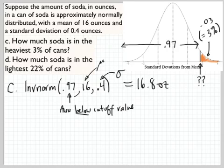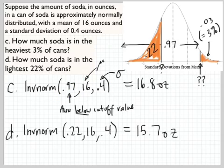So how much soda is in the lightest 22% of cans? So again, we're looking for a cutoff value. Here's 22% of the area. And I want to know, what's the can right here that cuts that off? Now this one, I already gave you area below. So that means you don't have to do anything besides go straight to inverse norm. You give it area below your cutoff value, 22%, 0.22. The mean and standard deviation you're working with, and that tells you that the cutoff value is 15.7 ounces. So that tells you that the lightest 22% of cans are 15.7 ounces or less. So that's inverse norm.